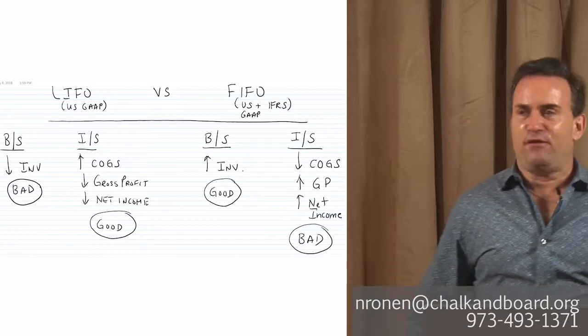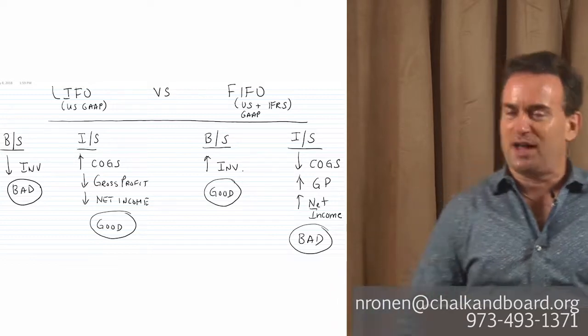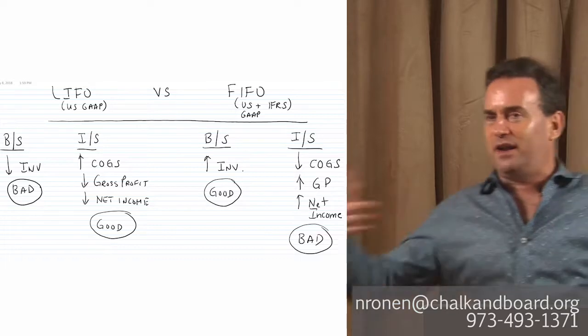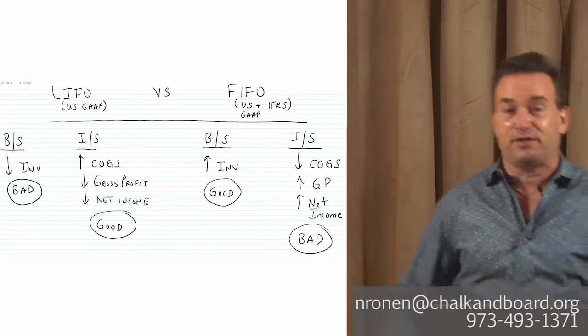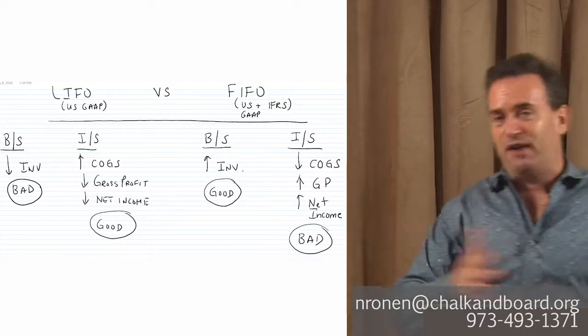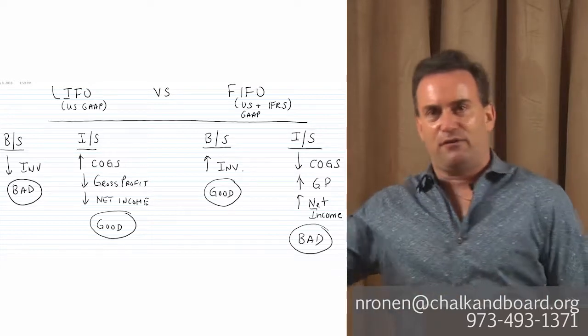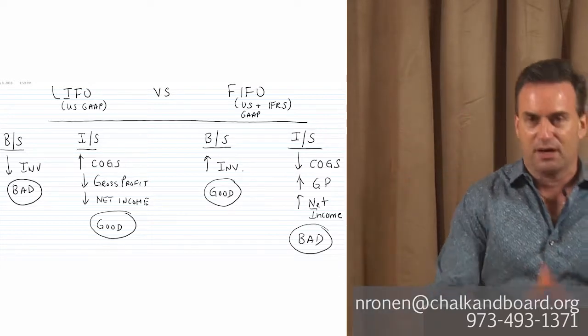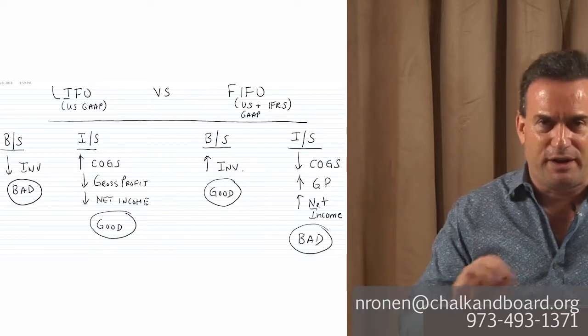Now, do they have to use FIFO when they do their financial statements? No, they do not. They could use LIFO, weighted average, specific identification price if they could use it, or FIFO - anyone they want under US GAAP. Under IFRS, they can only use FIFO, weighted average, or specific identification price. So that's what we call the inventory cost flow assumption.